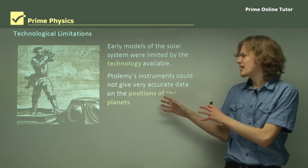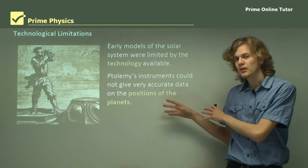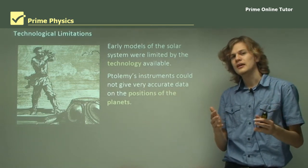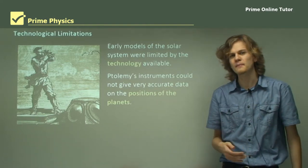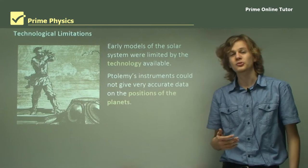They could not give very accurate data on the positions of the planets. They could give good enough data to get a model and predict roughly where they'd be the next time you looked at the sky, but they're nowhere near as good as today's telescopes.